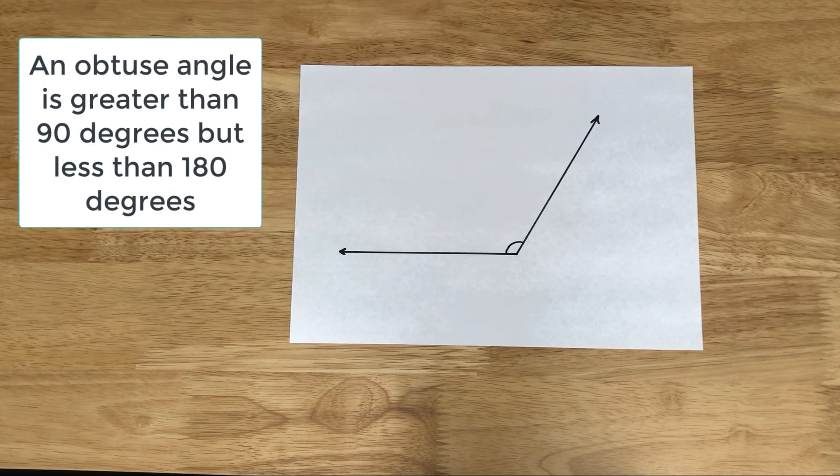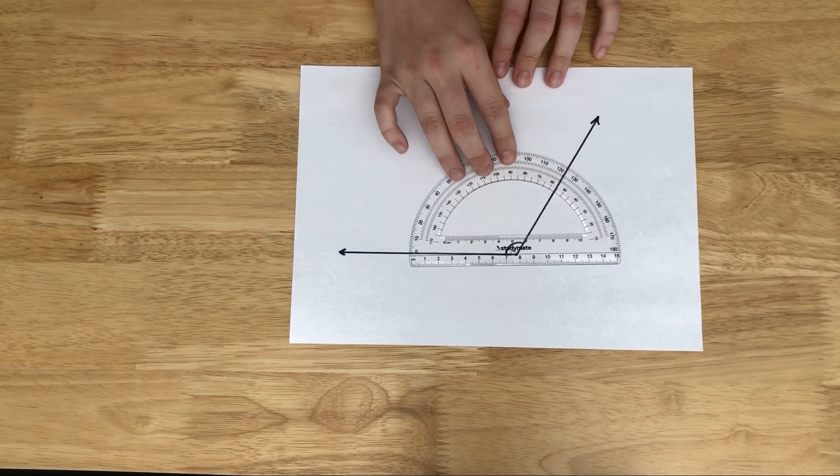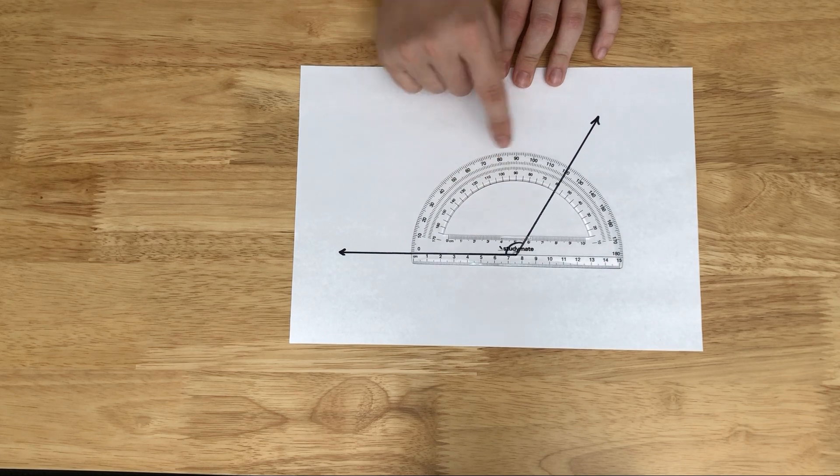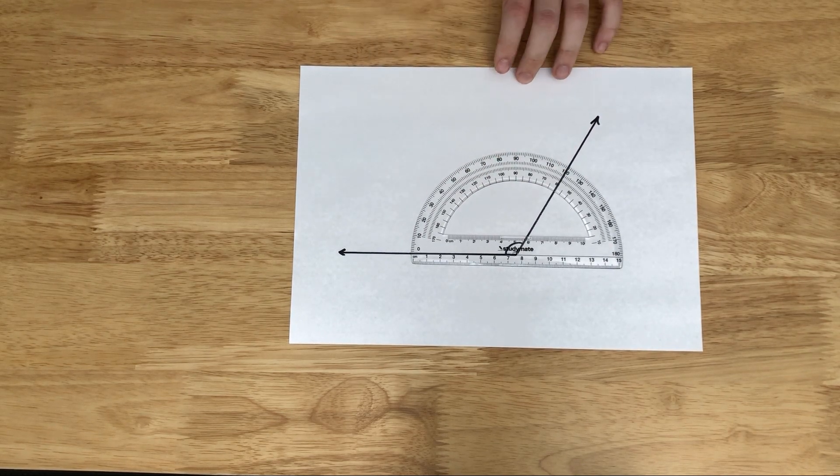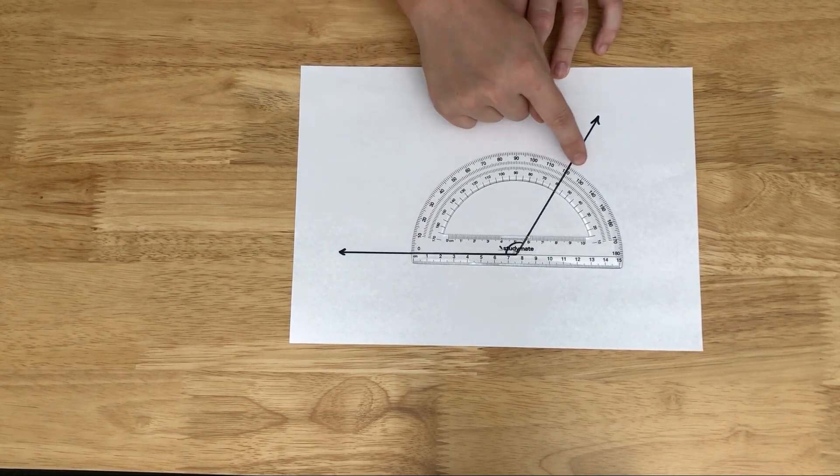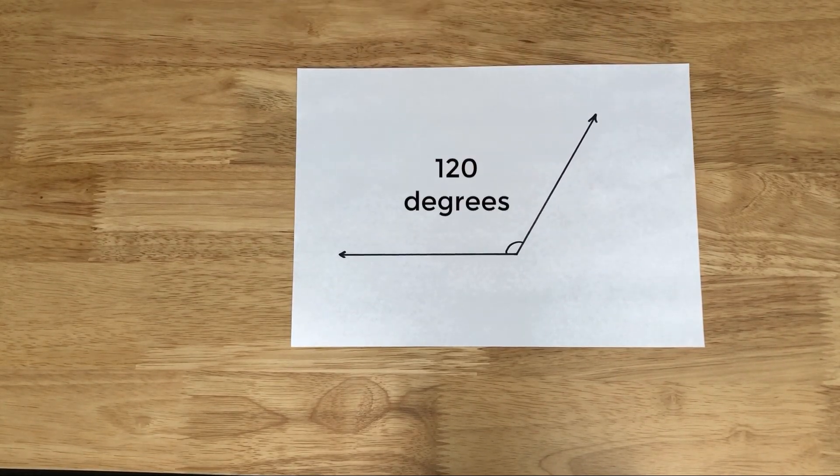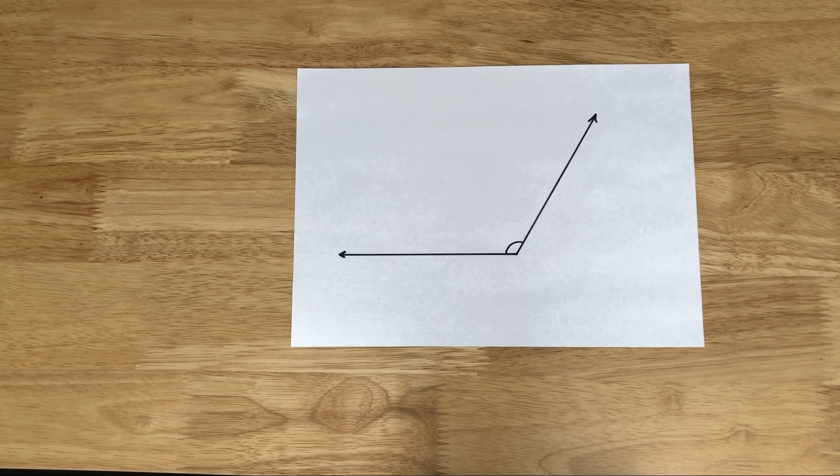Let's measure it using our protractor again. We line it up, and we can see that it's 120 degrees. We can count from 0 to 120. So our obtuse angle is 120 degrees.